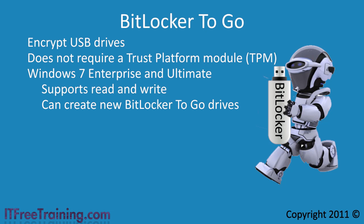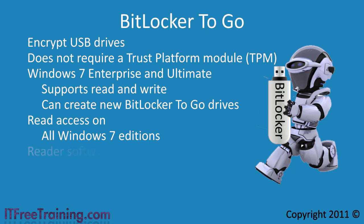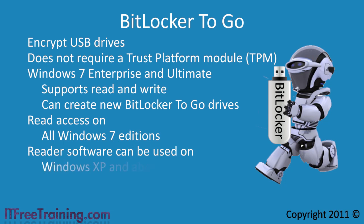Once you secure your USB drive with BitLocker To Go using the Enterprise or Ultimate Editions, it can be read on any edition of Windows 7. When BitLocker To Go is configured, reader software is added to the USB drive that can be used by earlier versions of Windows, allowing you to read encrypted files on operating systems such as Windows Vista and Windows XP.